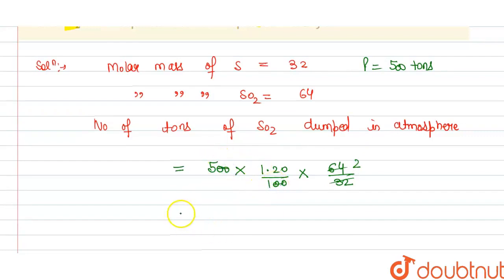So on solving this, we get this equals to 12 tons, and this is the answer for the question. So from this we can say that the number of tons dumped in the atmosphere each day is 12 tons. Thank you.